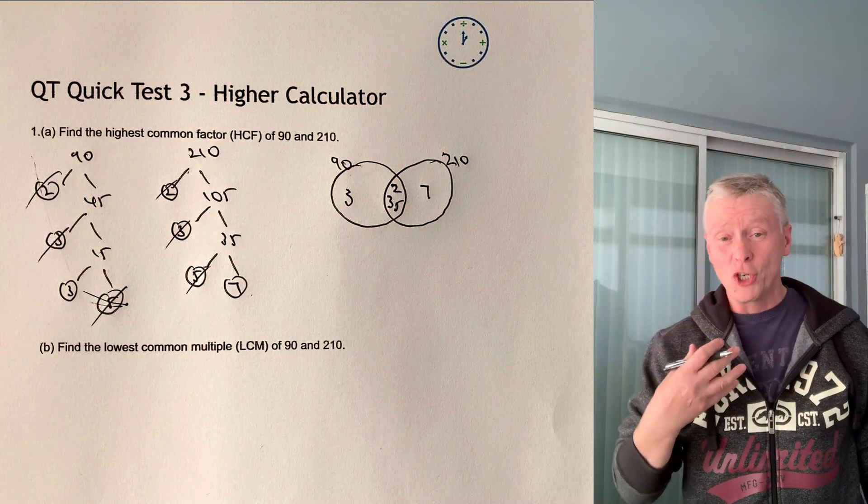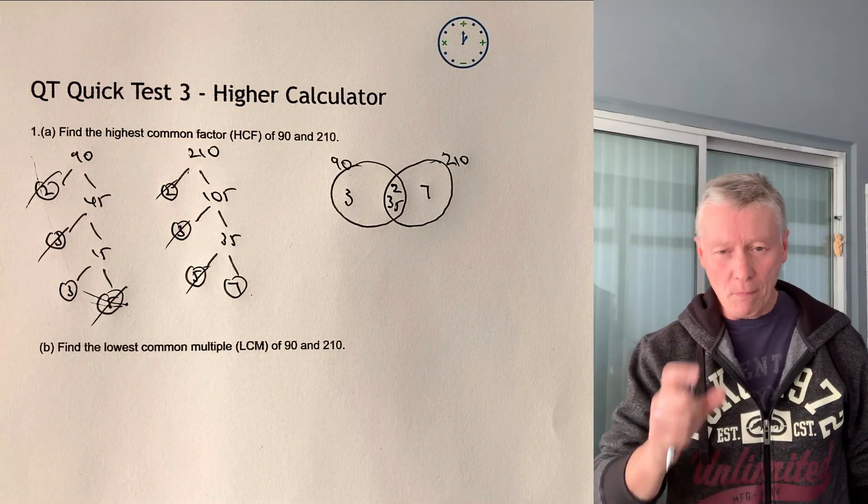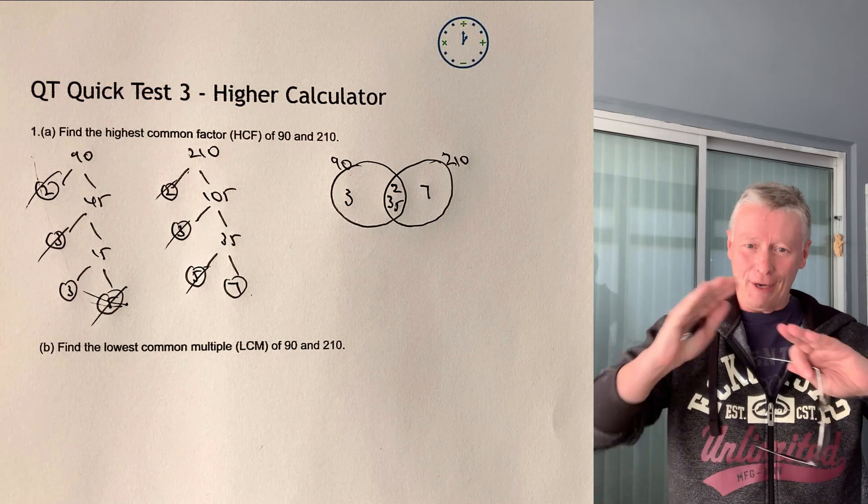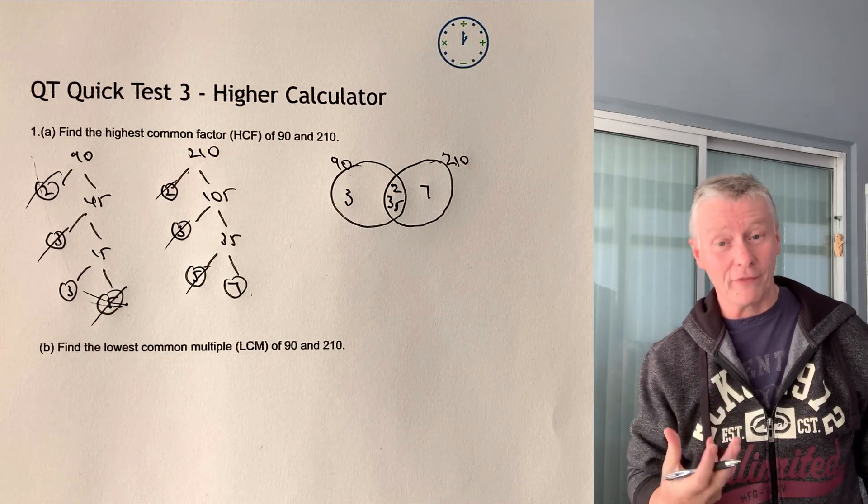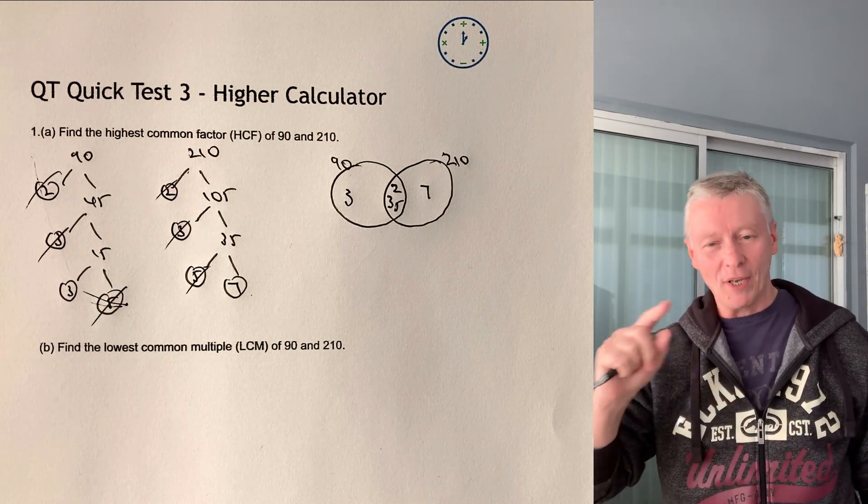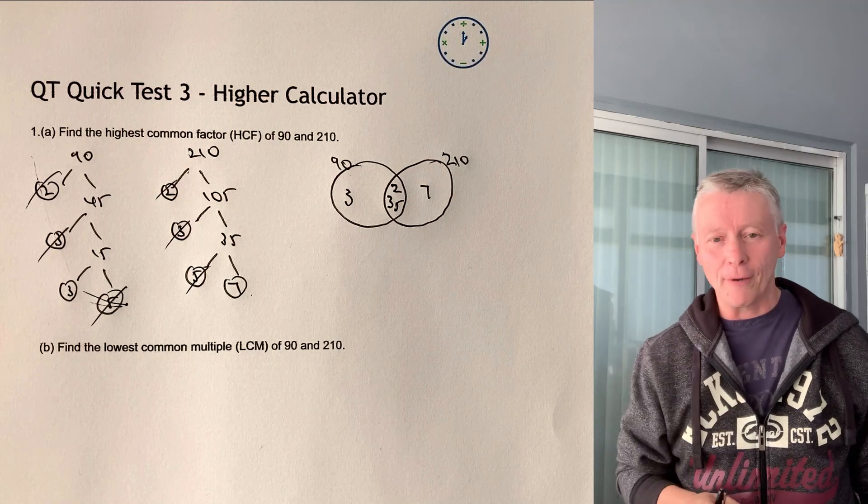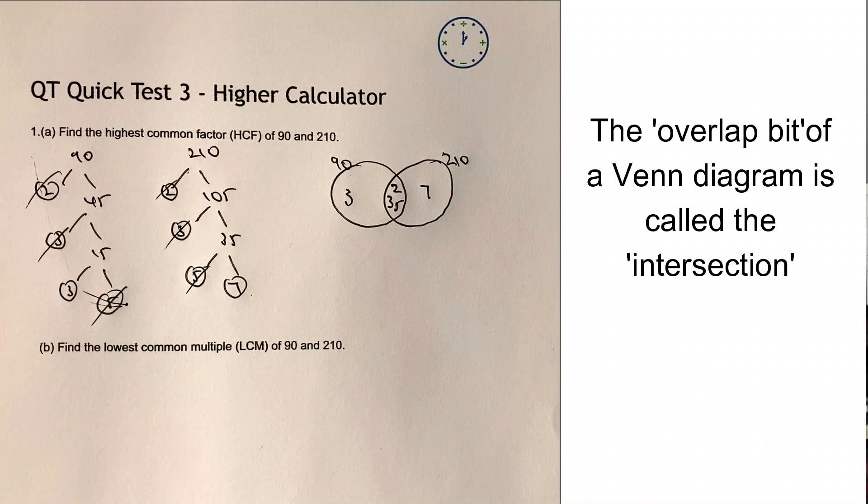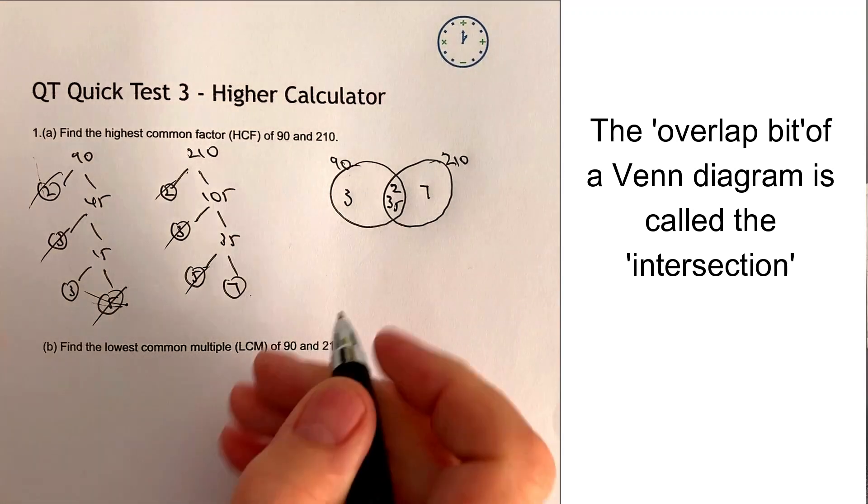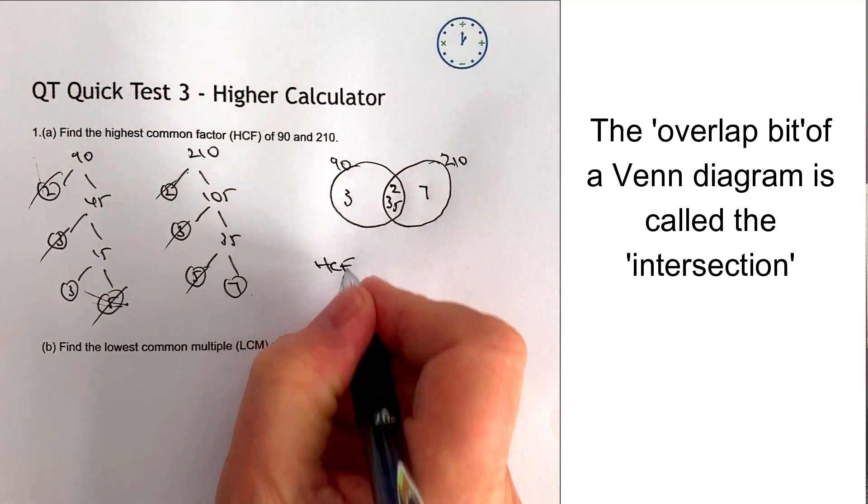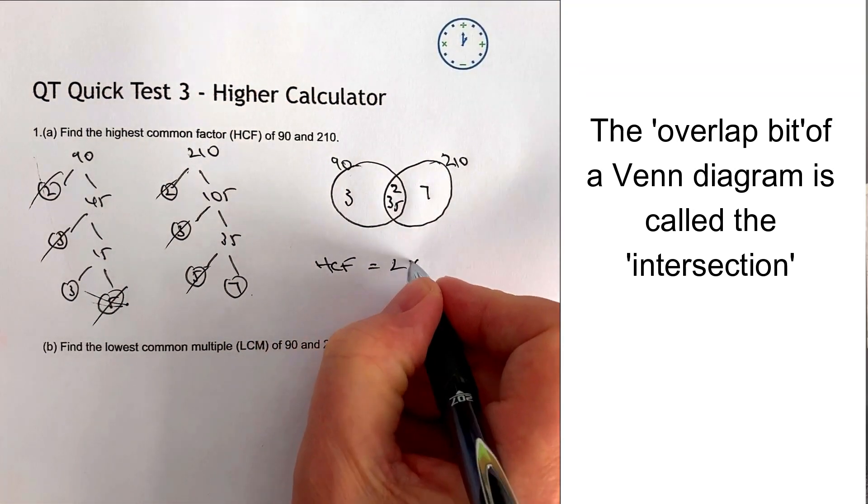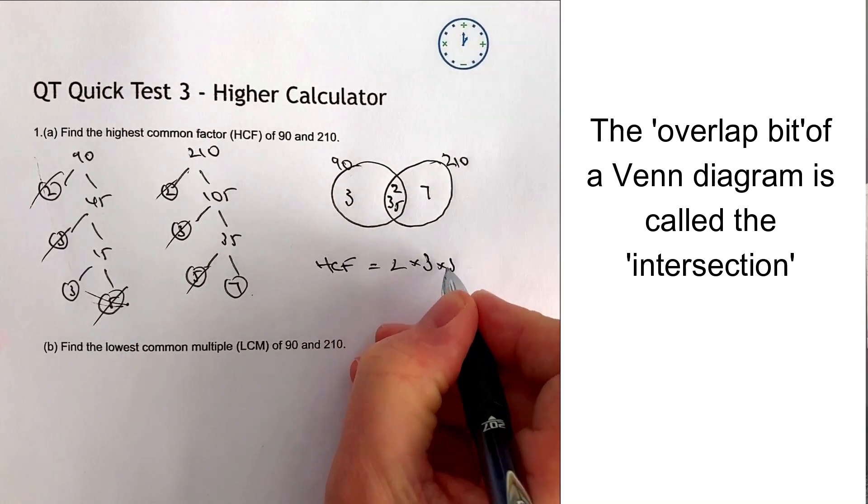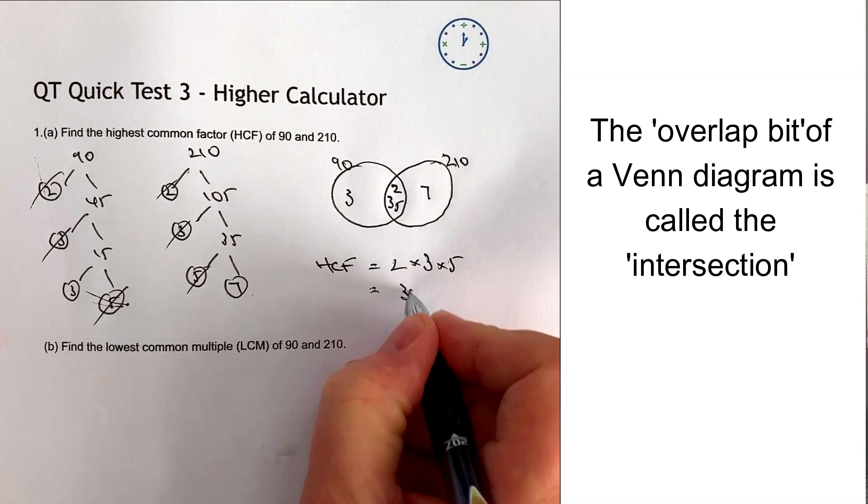What it allows me to do is say, well, those twos are the same, so I can put those in the middle. Those threes are the same, I can also put that in the middle. And also the five is the same, I can put that in the middle. Now, left in the 90 is going to be three and then left in the 210 is going to be seven. Once you've actually got that Venn diagram, the middle bit of it, the overlap side of it will give you the HCF.